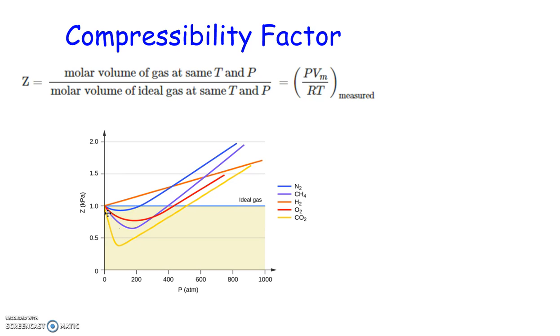If you look at this graph down here, you can see that an ideal gas is represented by this light blue line with a compressibility of 1. That would be where the molar volume of the gas is the same as the molar volume of the ideal gas.